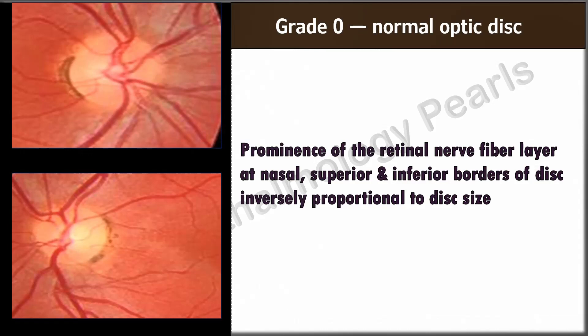Grade 0: the optic disc is normal and there is no papilledema. Some prominence of the retinal nerve fiber layer at the nasal, superior, and inferior borders of the disc, inversely proportional to the disc size, may be seen. That is, a mild absence of clarity of the nasal and temporal borders by the overlying nerve fiber bundles in very large discs can occur.